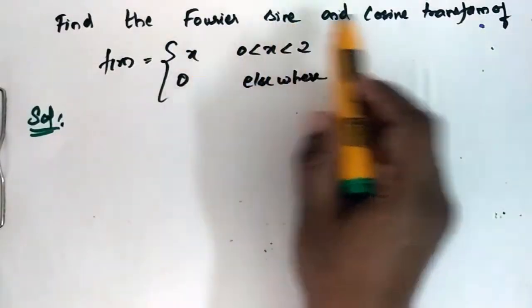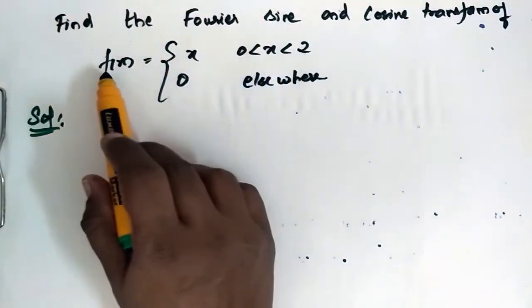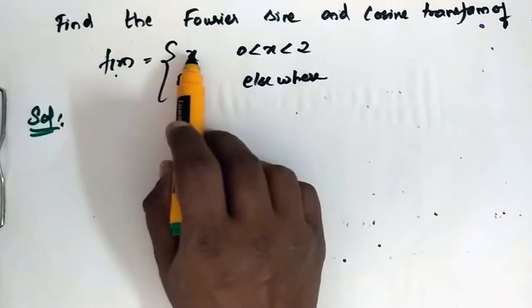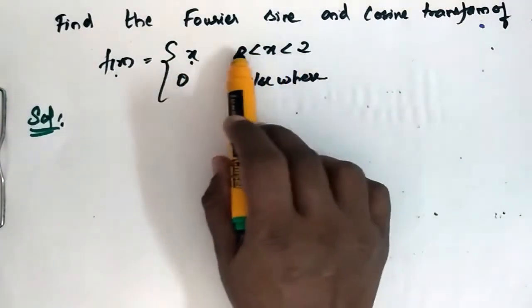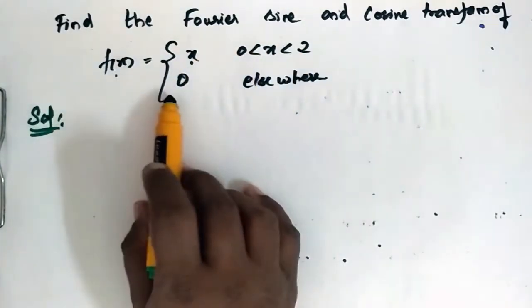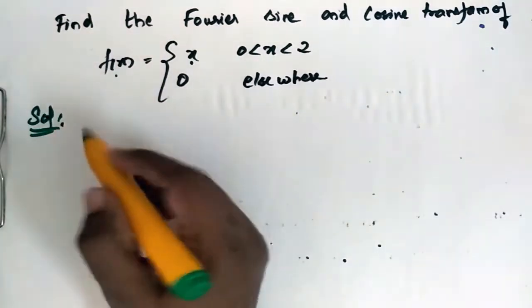Find the Fourier sine and cosine transform of f(x), where f(x) is equal to x when x is from 0 to 2, and f(x) is equal to 0 elsewhere.